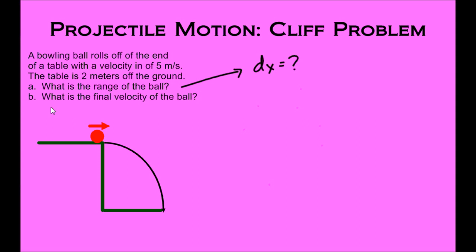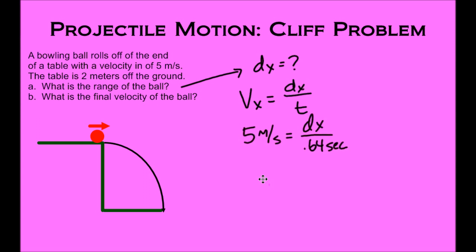Now for letter A: what is the range of the ball? That's asking for dx. There's really only one equation with dx in it: Vx = dx / t. We have two out of three variables, so we plug in 5 meters per second for Vx and 0.64 seconds for t. Multiplying 0.64 × 5 gives us 3.2 meters. So dx, the range or distance in the x direction, is 3.2 meters.